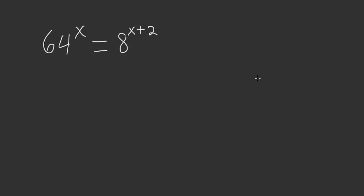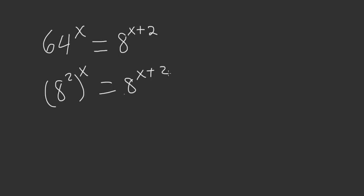In this video I will show you how to quickly solve this for x. To do that, first we need to change the basis to be the same. 64 can also be written as 8 squared. And distributing across we get 8 to the 2x is equal to 8 to the x plus 2.